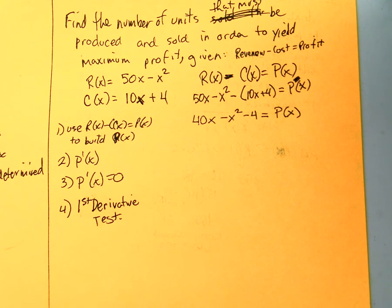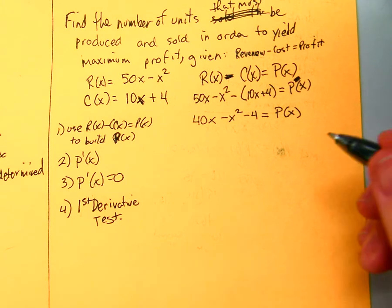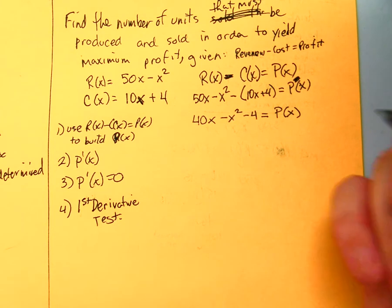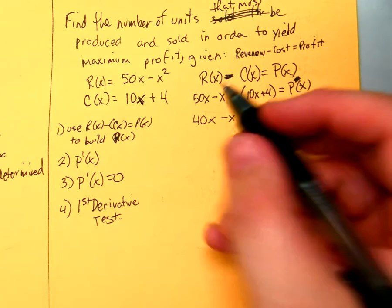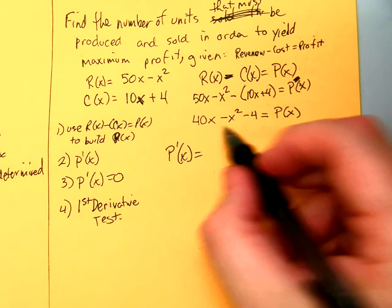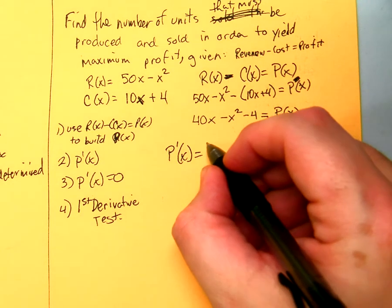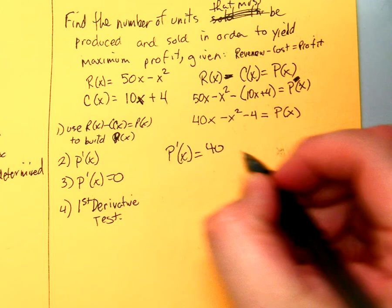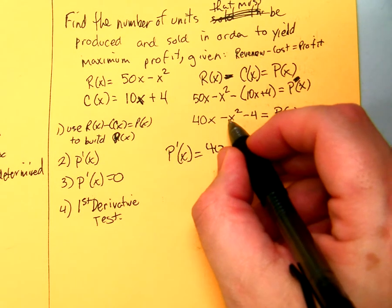These pens, they just bleed everywhere. Or I can't write, one of those two. I'm going to go with the pen's fault. Alright, so P prime of X. What's the derivative of 40X? 40. What's the derivative?